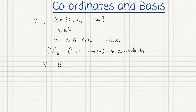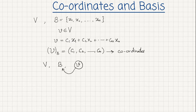If you have to find the coordinate vector of an element V, what you have to do is just write down this element as the linear combination of the basis elements and solve to find the values of the scalars c1, c2, ..., cn. Those scalars will be the coordinates of vector V with respect to the given basis. Let's see an example.